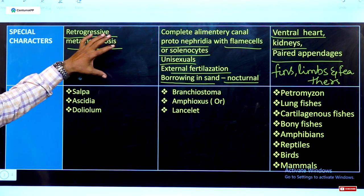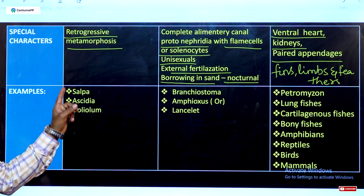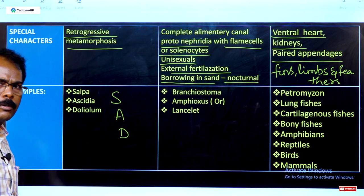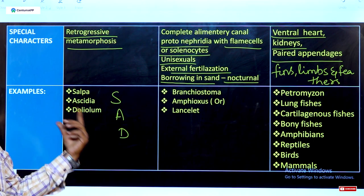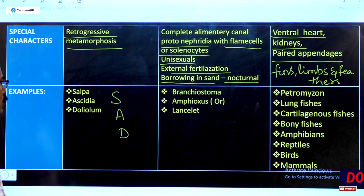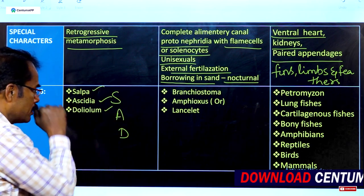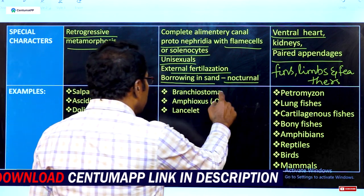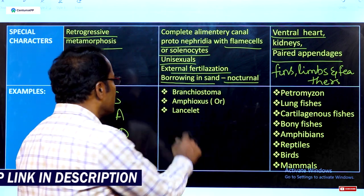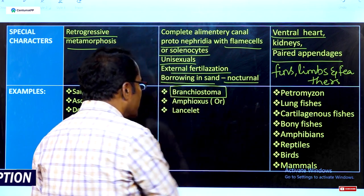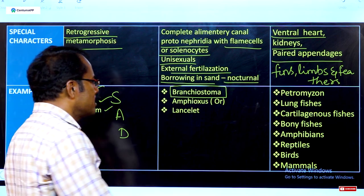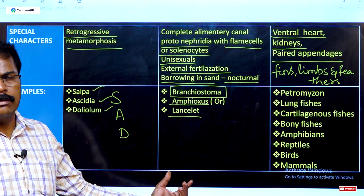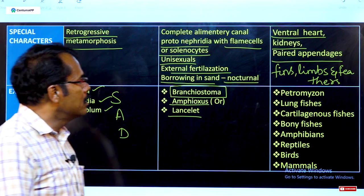Examples: Urochordata includes Salpa, Ascidia, and Doliolum. A useful mnemonic is to use the first letters: S, A, D. For Cephalochordata, there is only one organism — Branchiostoma, also commonly called Amphioxus or lancelets.